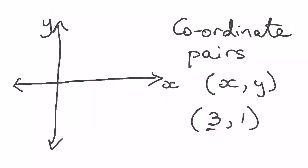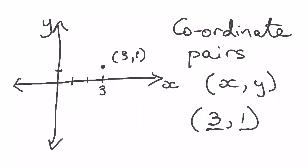I know that the 3 is first — that's the x because x comes first. That means I go across: 1, 2, 3 across. And then I go up 1. There is my point. I can label it (3, 1). So that is the point (3, 1).